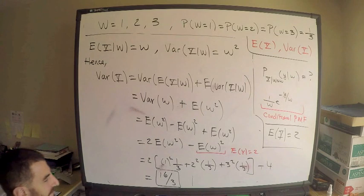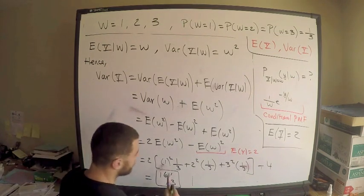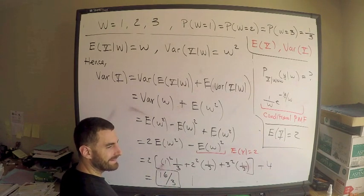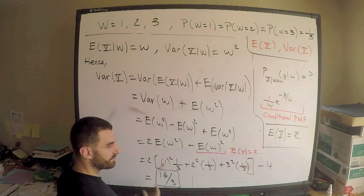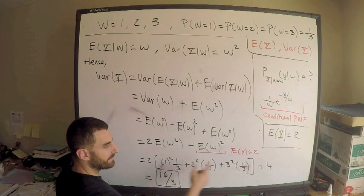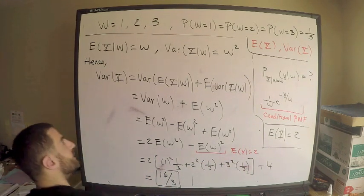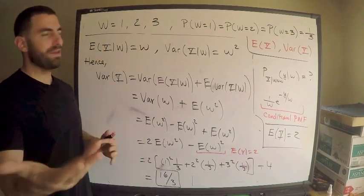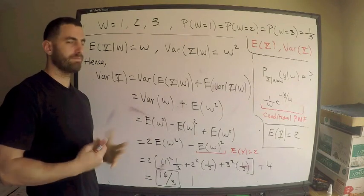Let me verify: 1 + 4 + 9 is 14, times 2 is 28, minus 12 — yes, that's right. So the variance of Y is 16/3. Hope that was helpful, and thank you for asking me this question.